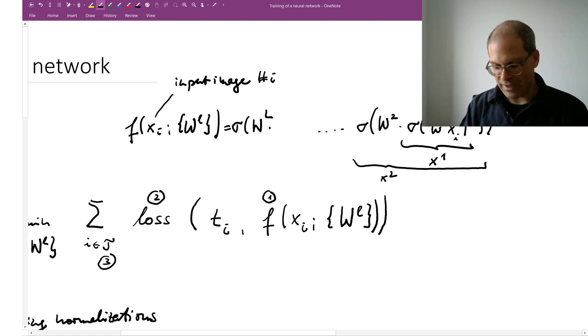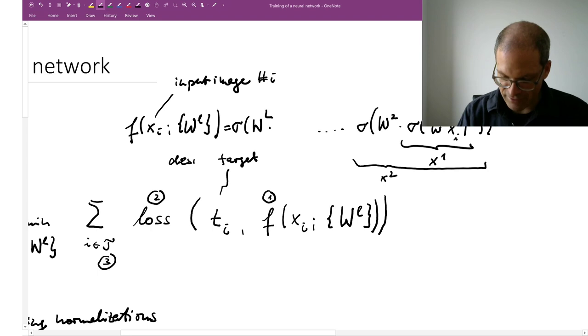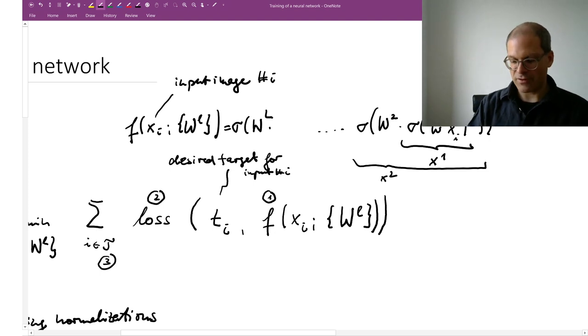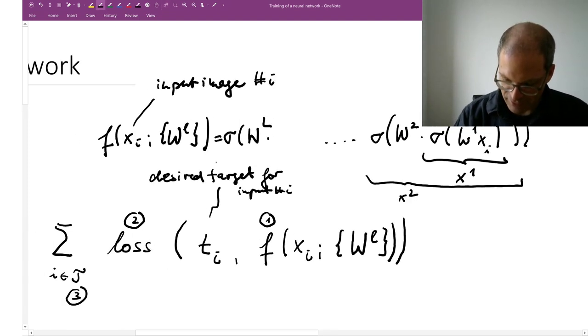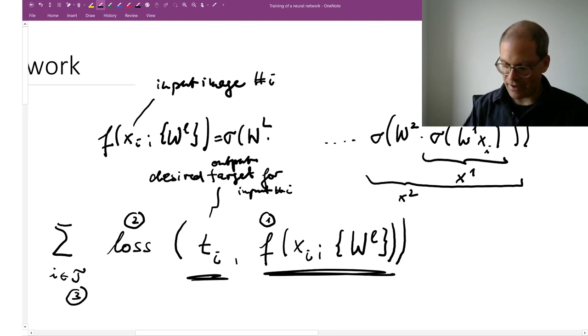At train time I am trying to figure out what are the good parameters that will make this output useful. An output is useful if the output that the neural network gives is close to the desired output, which in my training set are given as targets. This would be the desired target for input i, or the desired output for my input image number i. This is the desired output, this is what I found.